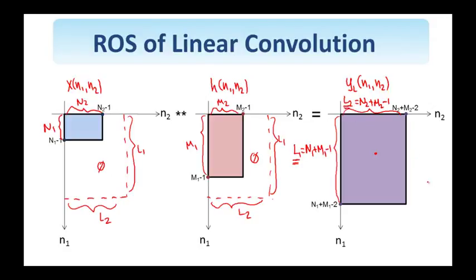But since the periodic extension is going to be with respect to L1, L2, we clearly see here that there's not going to be any overlap between the replicas of this signal, Y_L, and therefore, the result of the circular and linear convolutions is going to be identical.